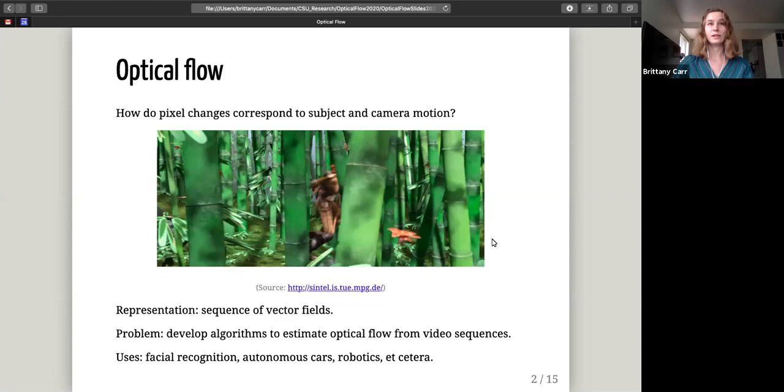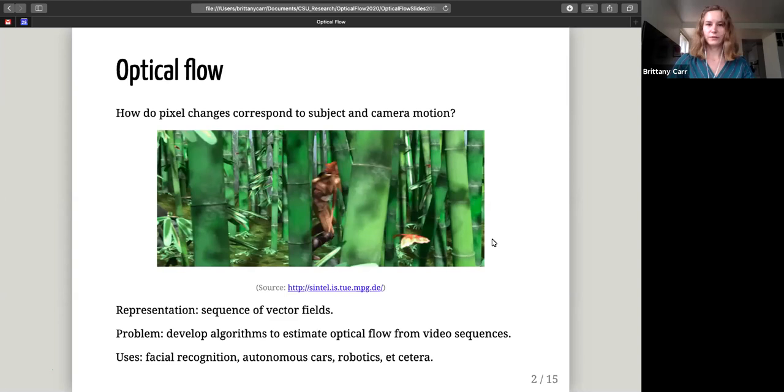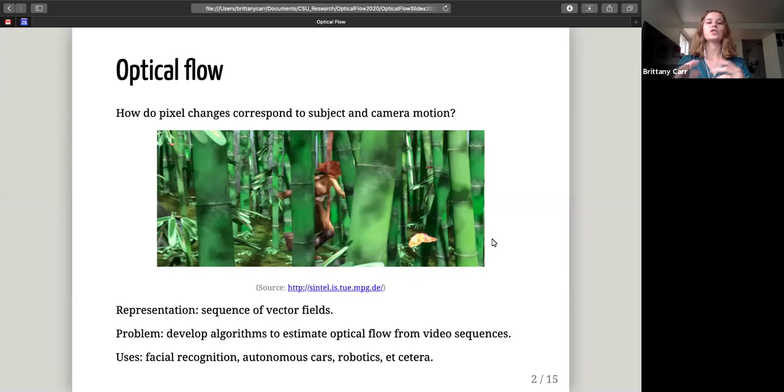So what is optical flow? Optical flow is how pixels change corresponding to how a subject is moving and how a camera is moving. So if you picture a car driving across the road that you're recording and you turn with the car, you have this idea of where the pixels are moving to show this motion you're trying to capture. The way we represent this is as a sequence of vector fields. So for each pixel in a given frame, we associate a vector with it to where that pixel appears to move in the next frame. So this is a problem that we're trying to develop algorithms to estimate optical flow from video sequences. The whole reason we'd want to do that is things like facial recognition, autonomous cars, robotics, and a bunch of other things that need to capture information about three-dimensional space given just a two-dimensional moving image.